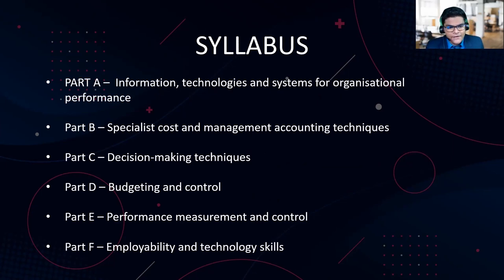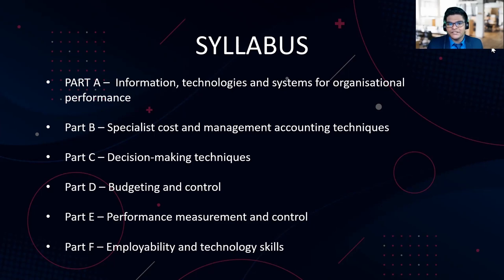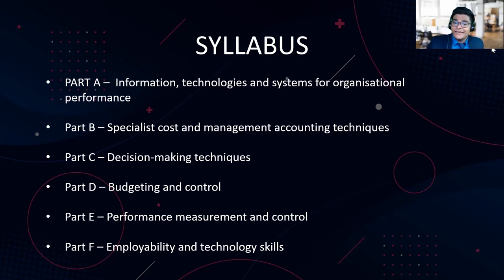Let's take a look at the syllabus here. We have six parts — it used to be five parts, now we have one more additional part. Part A is basically information, technologies, and systems for organizational performance. In order to enable efficient performance within the organization, we need to have some systems and technologies in place. There's not much numbers involved in Part A — it's just complete theory, and it's easier and interesting as well, because it has all the industry-updated concepts such as big data and data analytics. So it all comes under Part A of the syllabus.